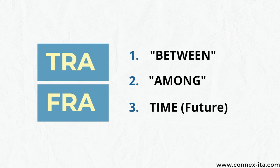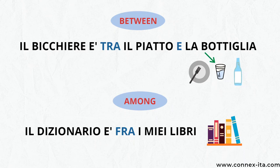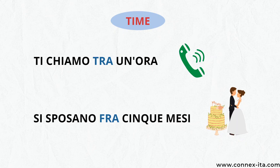Finally, 'tra' and 'fra' are basically the same and you can use them with the meaning of 'between' and 'among', or for referring to a time in the future. For example, 'Il bicchiere è tra il piatto e la bottiglia' — the glass is between the plate and the bottle. 'Il dizionario è fra i miei libri' — the dictionary is among my books. 'Ti chiamo tra un'ora' — I'll call you in an hour. 'Si sposano fra cinque mesi' — they are getting married in five months.